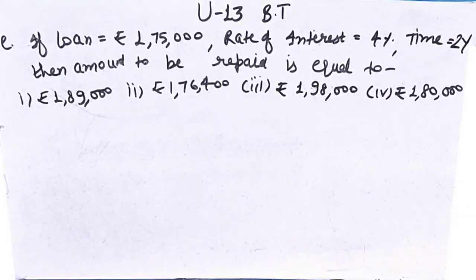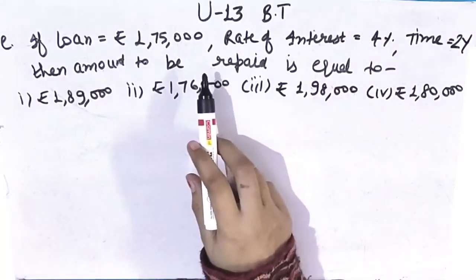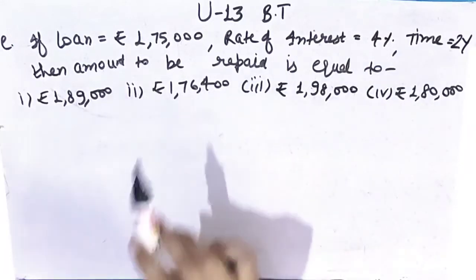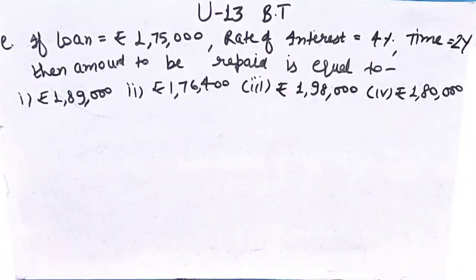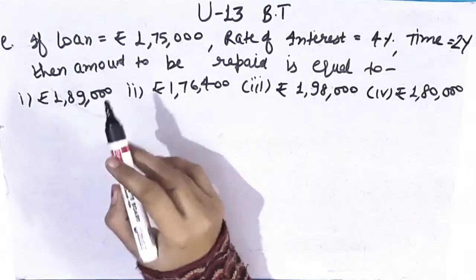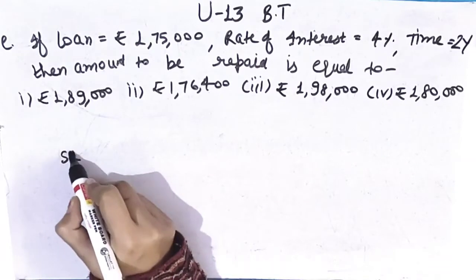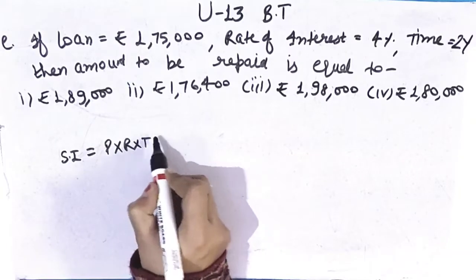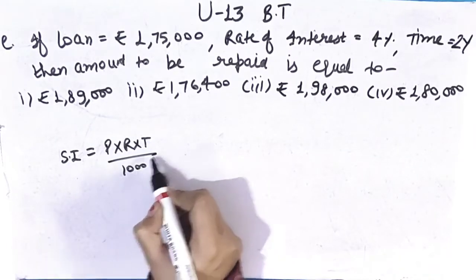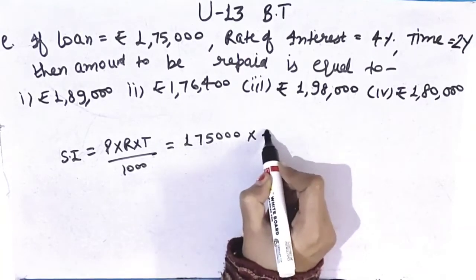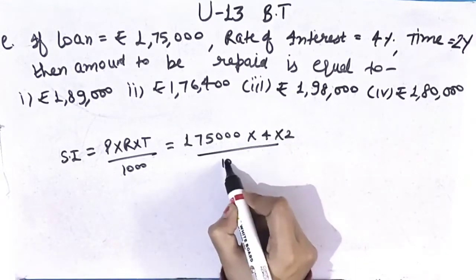Part (e): If loan is Rs.1,75,000, rate of interest is 4%, and time is 2 years — then what will be the amount? Formula of amount is principal plus simple interest. Before finding amount, we first find simple interest. Simple interest formula is principal × rate of interest × time ÷ 100. Principal is 1,75,000, rate of interest is 4, time is 2, divided by 100. Cancellation: 2 zeros cancel.